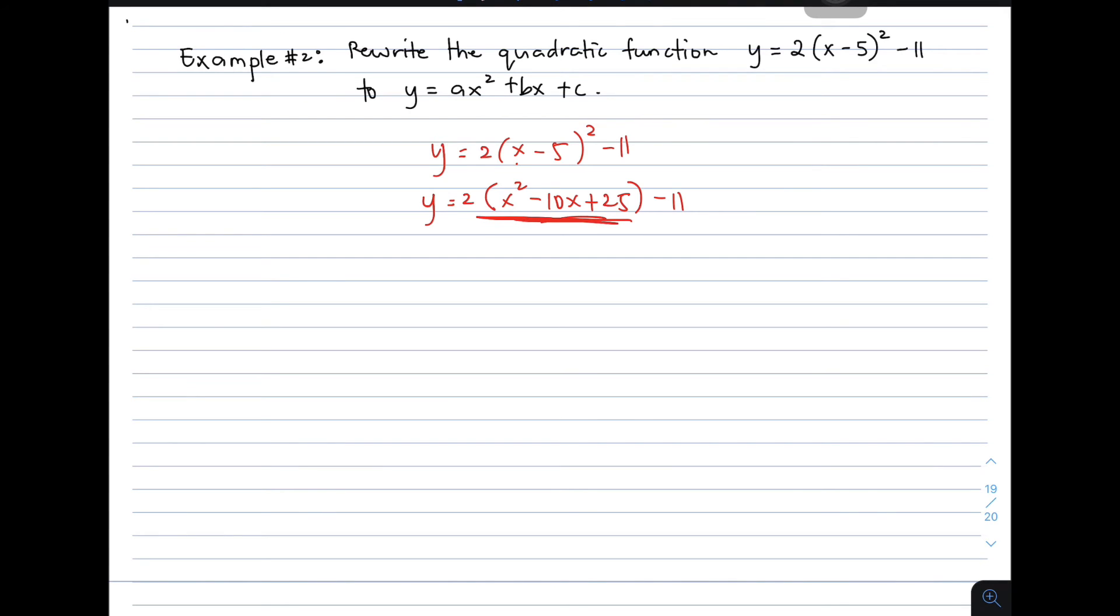This is now the expanded form of x minus 5. Even if you use the FOIL method in multiplying that, let's try it. x times x is x squared. x times negative 5 is minus 5x. Negative 5 times x is minus 5x. Negative 5 times negative 5 is plus 25. Combining like terms, you have x squared minus 10x plus 25.